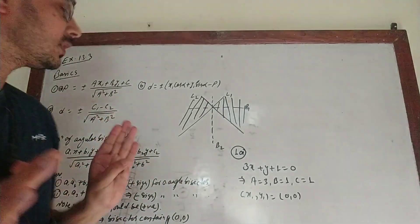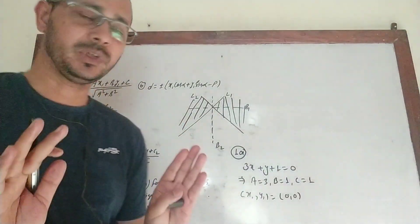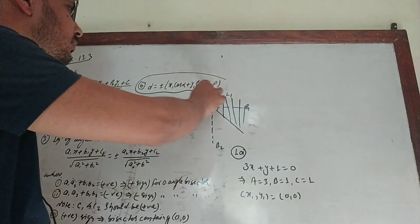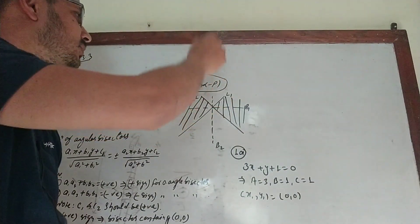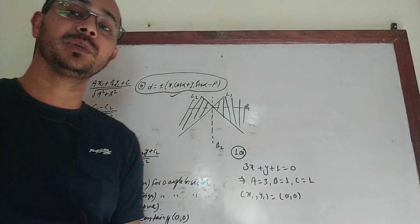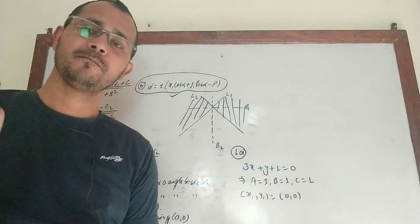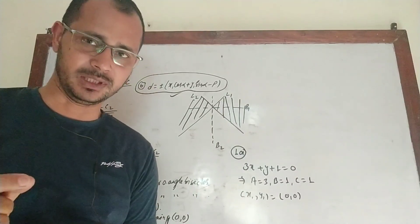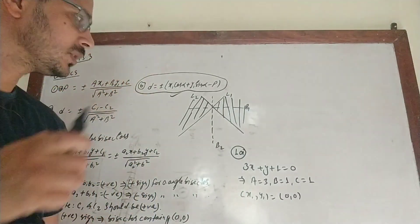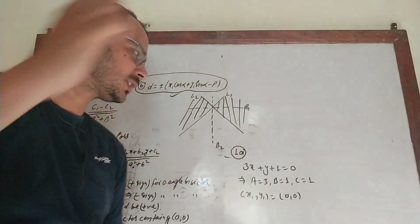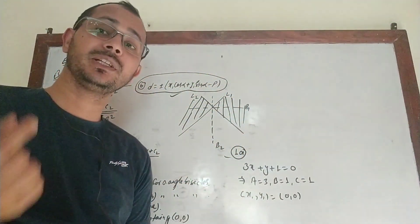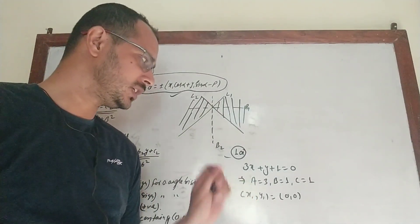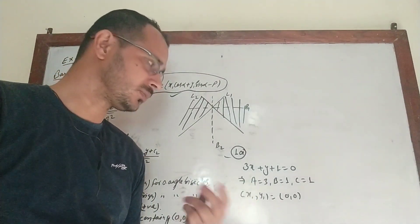These are the formulas for Exercise 13.3. Taking the help of this formula, we can determine the perpendicular distance from a given point to a given line. Question number 1: find the perpendicular distance from a point to the line. The line is 3x + y + 1 = 0.